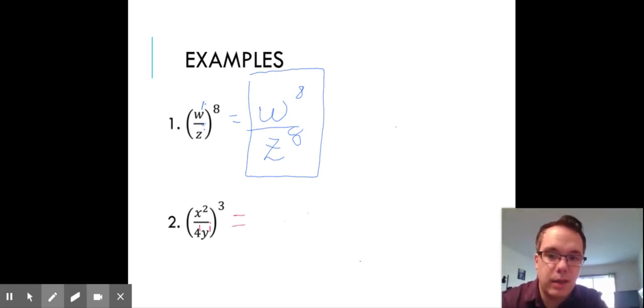So if I do that, x^2, 2 times 3, I'm going to get x^6. So I have 4^1. And so I'm going to take 1 times 3, so I'm going to get 4^3. And then I have y^1. And so I'm going to take my 1 times 3 again, and I get y^3.